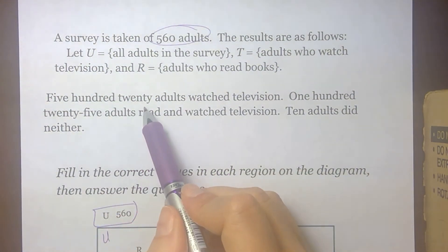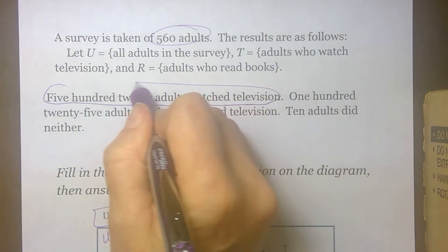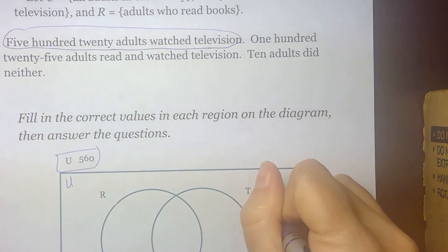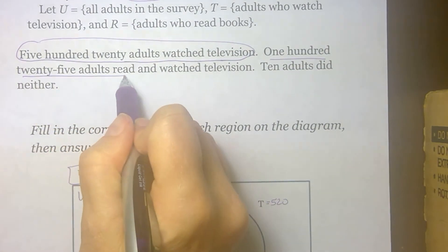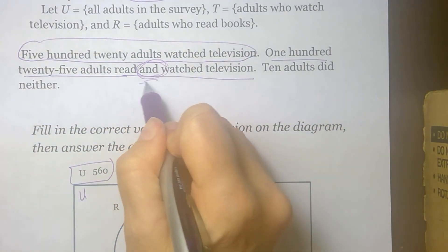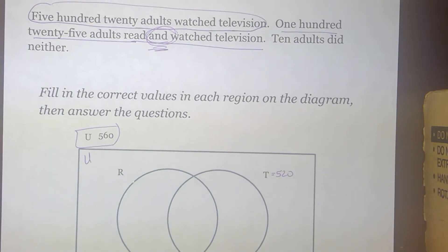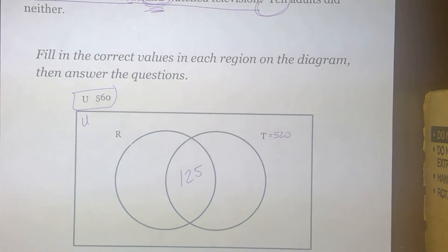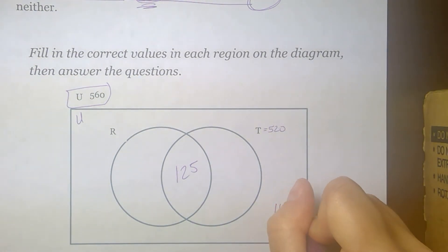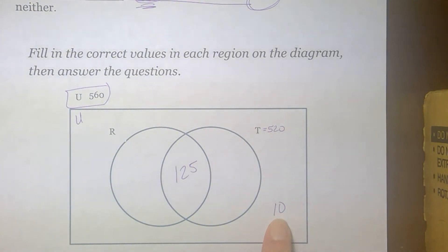So we've got 520 adults who watch television. That's the total number of adults who watch television. So my T total will be 520. 125 adults read and watch television. Well, which region does that 125 go in? Does it go in region 1, region 2, region 3, or region 4? If they read and watch TV, then that means there's 125 people right there. Then it tells me that 10 people, 10 adults in the survey said they didn't do either one. Well, if 10 people don't do either one, then that means they're out here in the universal set, but not part of a loop.